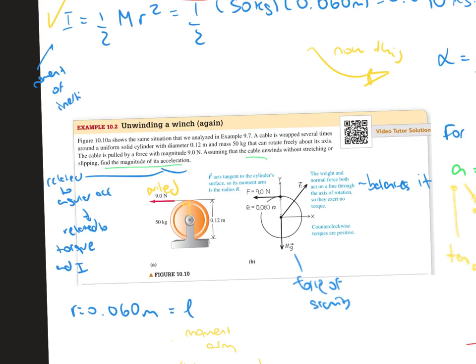So in this case we have a cable that is wrapped several times around a uniform solid cylinder with a diameter of 0.12 meters and a mass of 50 kilos, and this can rotate freely about this axis.